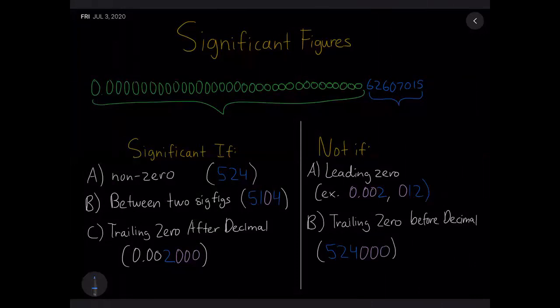There are a couple of rules to determine significant figures. A digit is significant if it's non-zero — like in 524, where 5, 2, and 4 are all significant. Or if it's between two significant figures — like in 5104, where the zero between 1 and 4 is significant. The third rule is trailing zeros after the decimal: in 0.002000, the zeros before the 2 are not significant, but the zeros after the 2 are significant.